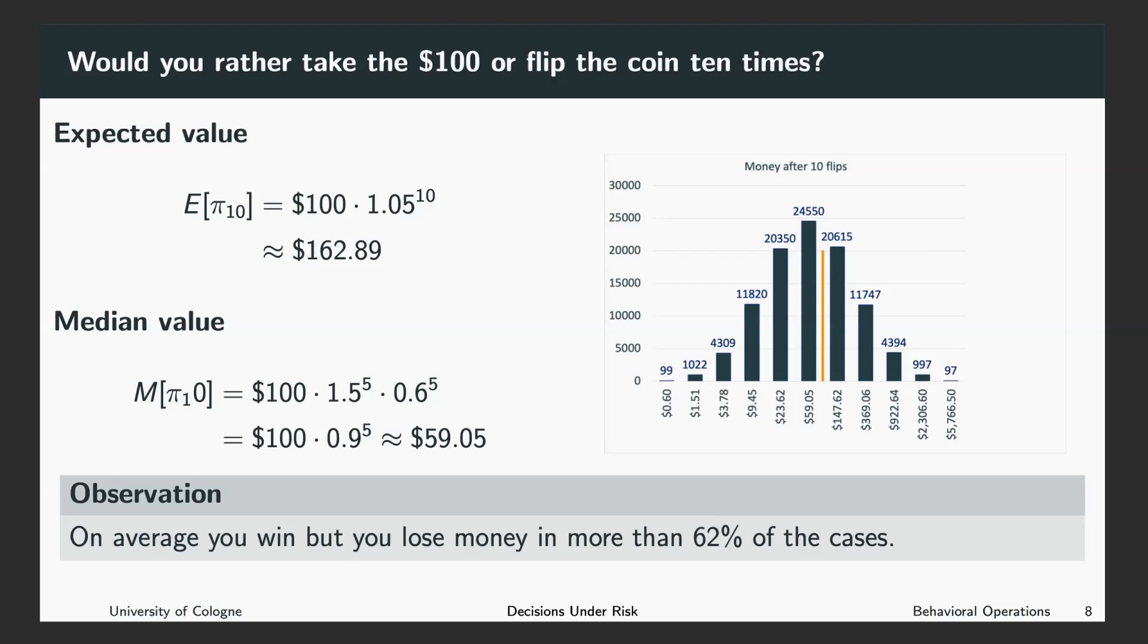The orange bar depicts your initial investment, the $100 you started with. And what you can see here that the majority of the outcomes are left to this investment. So in the majority of the cases you will earn less than you invested. So here the observation: on average you win, but you lose money in more than 62% of the cases.